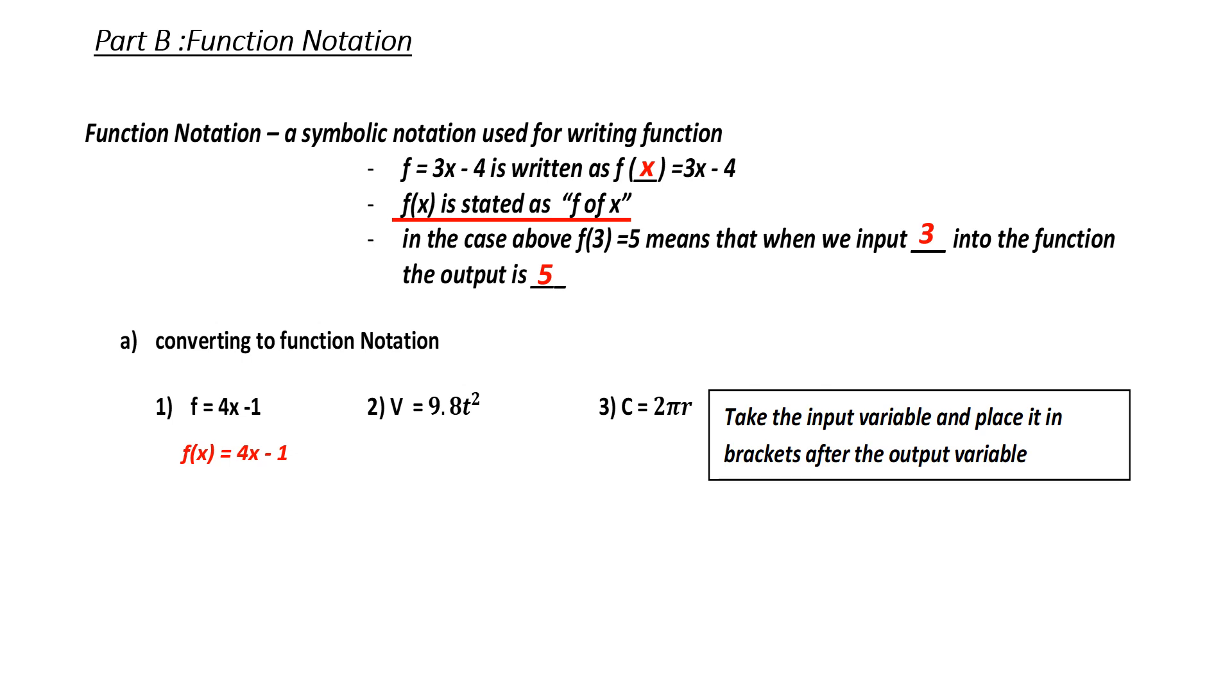Stop this recording now and try 2 and 3. Hopefully, you wound up getting v of t is equal to 9.8t squared. You should have taken the t and put it in front of the v in brackets. For number three, you should have taken r and put it in brackets in front of c.